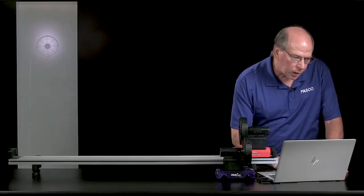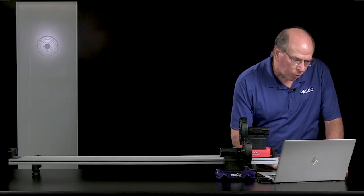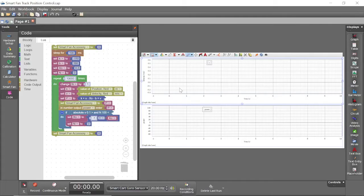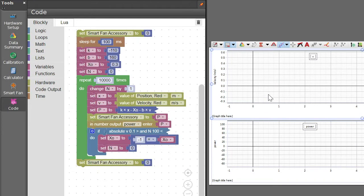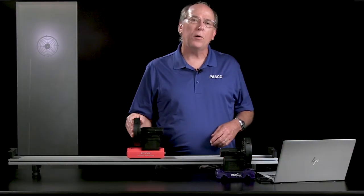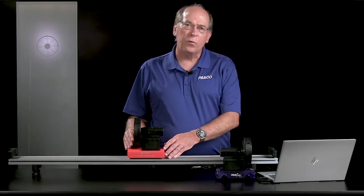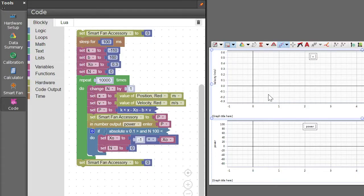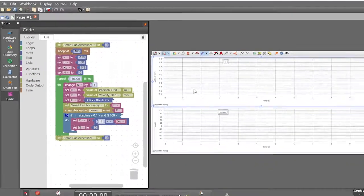Let's take a look at an example Blockly program. This Blockly code controls the SmartFan thrust based on the position and velocity being measured by the SmartCart. The parameters have been set to cause the SmartCart to oscillate back and forth, increasing in amplitude until it travels over most of the track.